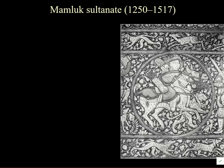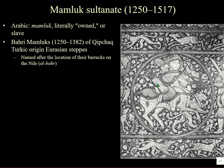The Mamluk Sultanate ran from 1250 to 1517. The word Mamluk literally means 'owned' — it is a word for a slave — and these horse warriors were bought on the steppes. There are two main periods: the Bahri Mamluks, who are Kipchak Turks from the Eurasian steppes, often called Bahri Mamluks named after their barracks on an island in the Nile.